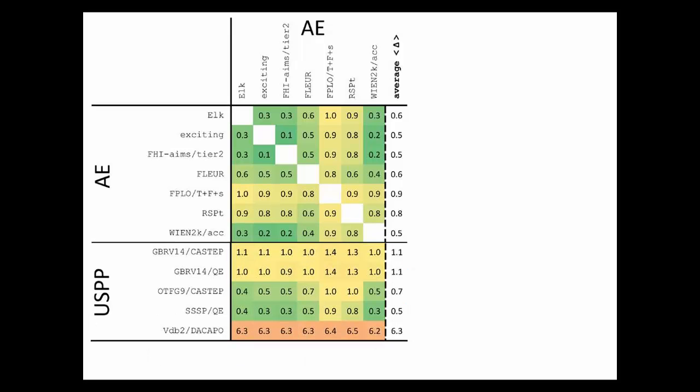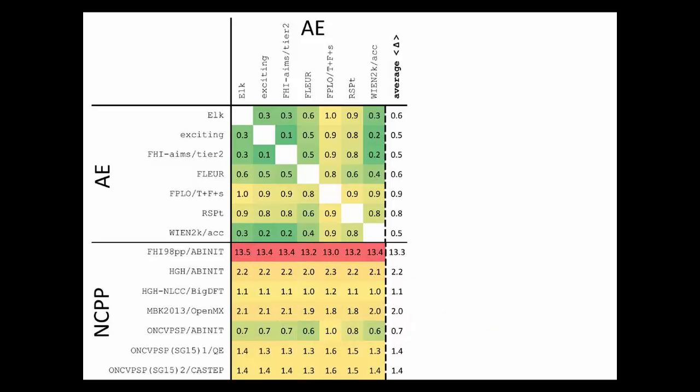Same story for ultra soft pseudopotentials. Here there are five ultra soft pseudopotential combinations compared to the all-electron methods. And again, the numbers are small, except if you go to a somewhat older implementation, an older set where the deviation is clearly larger. And exactly the same for the norm conserving pseudopotentials. Everywhere, small numbers, except if you take a very old pseudopotential set.